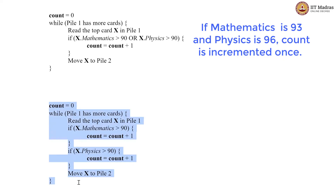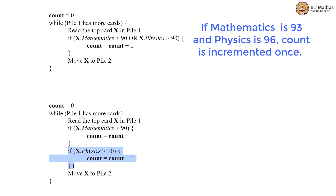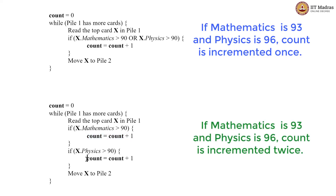Now look at this piece of code, which is written like the previous example where we check each condition independently and then increment count. The problem here is a student who has got greater than 90 in both subjects — in mathematics and in physics — is going to lead to count being incremented twice: once in the first if statement and once in the second. Both these if statements will come out true if the student has got greater than 90 in both. So count is incremented twice here, whereas in the OR version count is incremented only once even though the student has greater than 90 scores in both subjects.